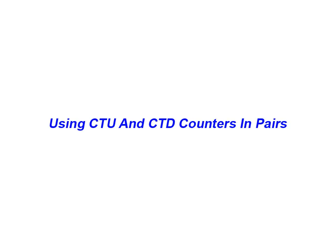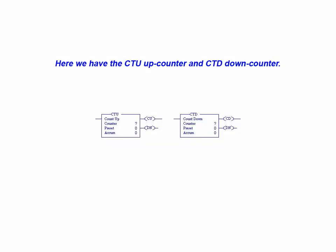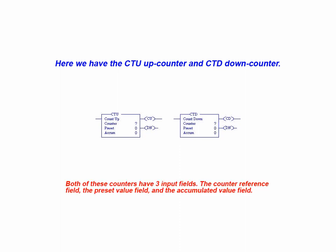The purpose of this animation is to illustrate how CTD and CTU counters can be used in pairs. Here we have the CTU up counter and CTD down counter. Both of these counters have three input fields: the counter reference field, the preset value field, and the accumulated value field.